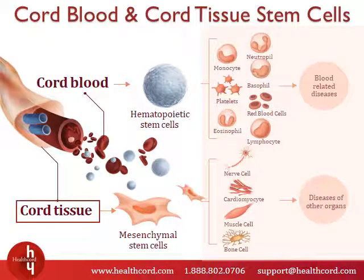Cord tissue contains another type of stem cells known as mesenchymal stem cells. They act as a medical surveillance team to repair and regenerate the body in special ways. Mesenchymal stem cells are being explored for their potential for treating diseases involving organs other than the blood system and the immune system.